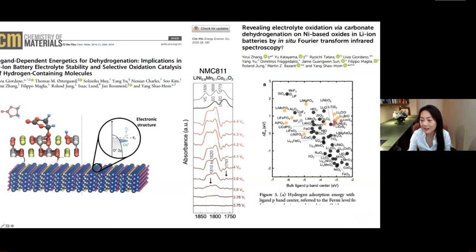So utilizing this concept, we want to design stable surfaces with the minimum reactivity to oxidize electrolytes. Then we will want to have surfaces with a very high Fermi level away from the ligand P band center to minimize electrolyte oxidation and increase the cycle life of batteries.